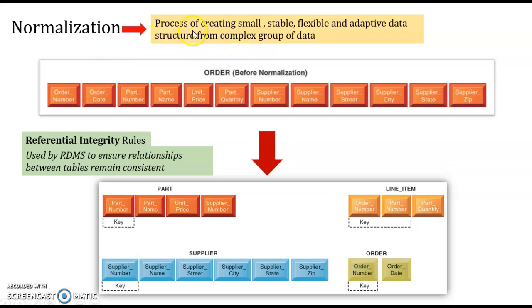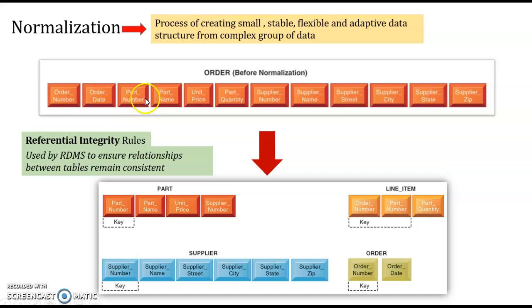Next we have normalization. Normalization is the process of creating small, stable, flexible, and adaptive data structures from complex groups of data. Before normalization, everything is put in one place. After normalization, we delegate — for example, the order entity goes under the order, part entity under part, and supplier under the supplier entity.